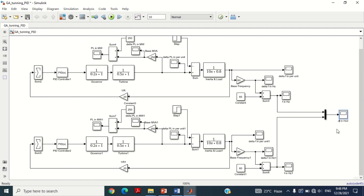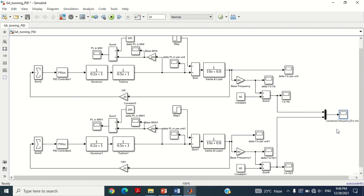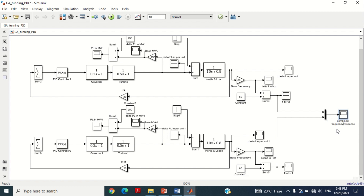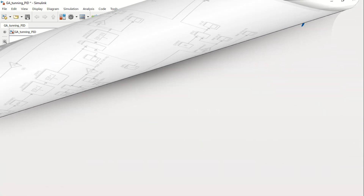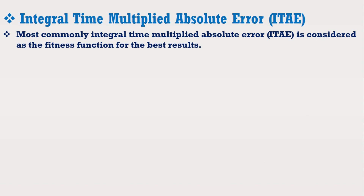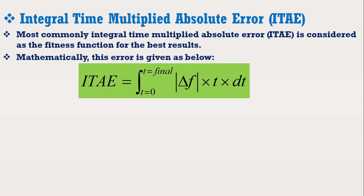Friends, in the previous video we discussed that genetic algorithm needs a fitness function to optimize the parameters of the PID controller. The fitness function in this model is considered as the error of the system. Most commonly, integral time multiplied absolute error (ITAE) is considered as the fitness function for the best results. Mathematically, this error consists of the integral of the absolute error of change in frequency multiplied with time, where the integral of time is taken from 0 to the final simulation time.